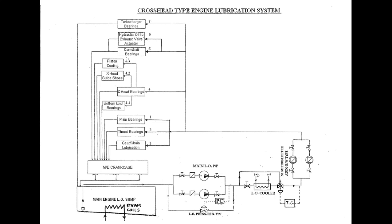In this video we are going to discuss the crosshead type engine lubrication system using a block diagram and line diagram. In the case of a crosshead type engine, the underside of the liner is separated from the crankcase by means of a diaphragm. This means the liner cannot be splash lubricated, so a separate cylinder lubrication is necessary.